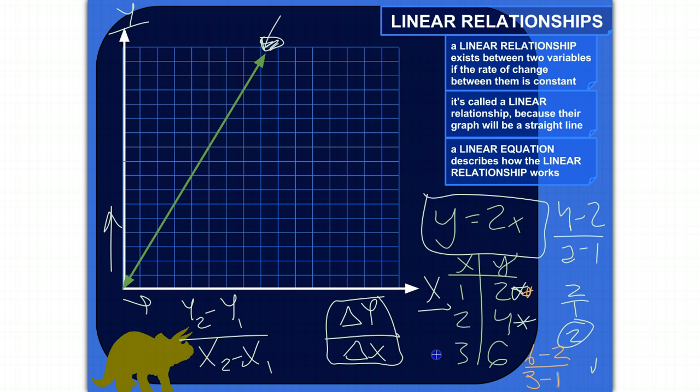6 minus 2 is 4, and 3 minus 1 is 2. Well, if I reduce that down, 4 over 2, that is equal to 2 as well. So the rate of change is also 2.